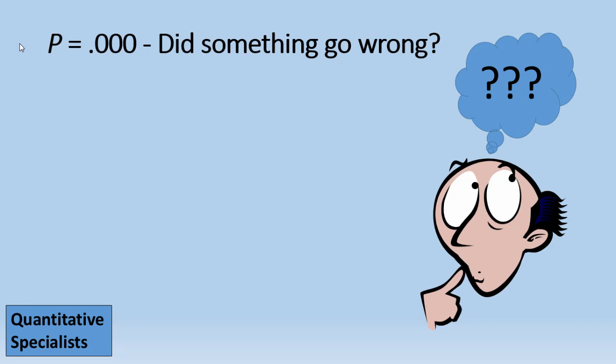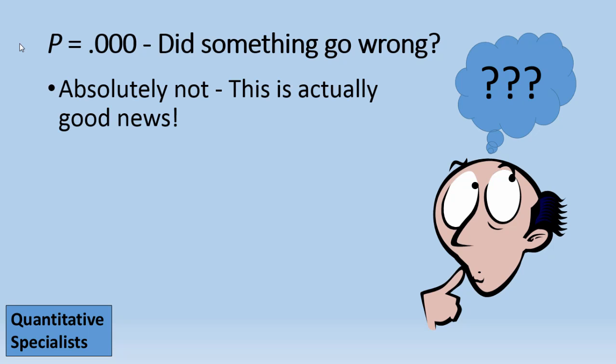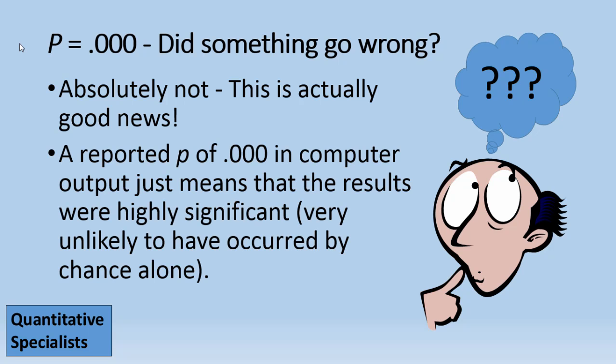So did something go wrong when you have a p reported as .000 like in SPSS? Actually not at all. This is actually quite good news if you see that in your computer output. A reported p of .000 in computer output really just means that the results were highly significant, or in other words they're very unlikely to have occurred by chance alone.